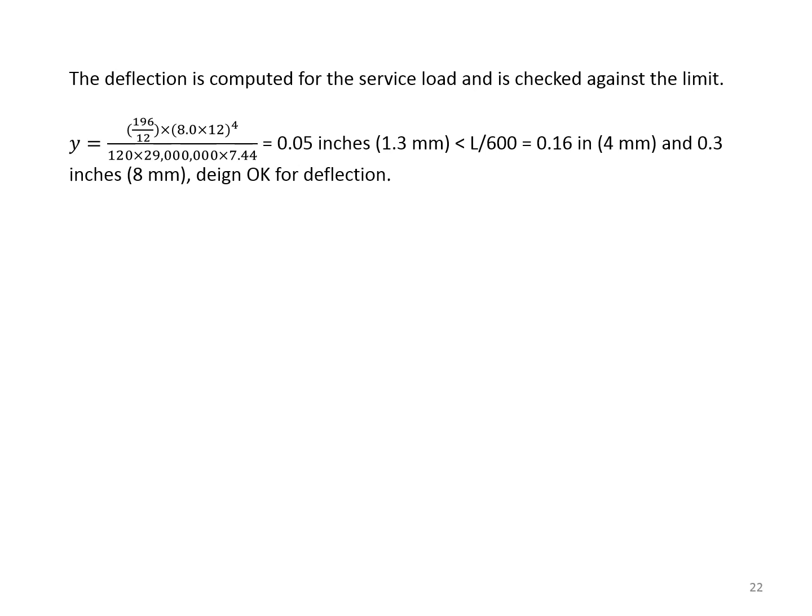Finally, the deflection. In computing the deflection, make sure to use pounds and inches consistently. Our load was 196, if you remember. The peak of the load was 196 pounds per foot, so we divided by 12 to have pounds per inch. Everything else is put in inches and pounds. And the final answer is 0.05 inches. Certainly, this is less than L/600 and 0.3 inches. So our lintel is also okay for deflection.